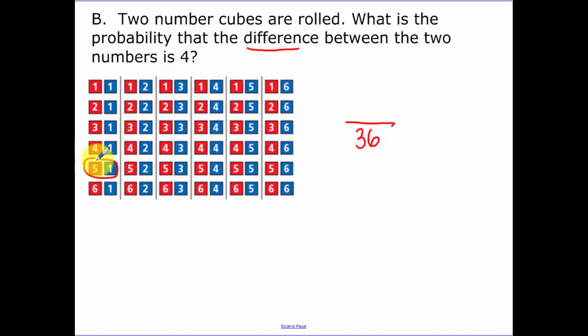Five minus one. So let's go to one minus five. Six minus two. Two minus six. That's all that I see, so that is going to be four out of 36, which reduces to one out of nine.